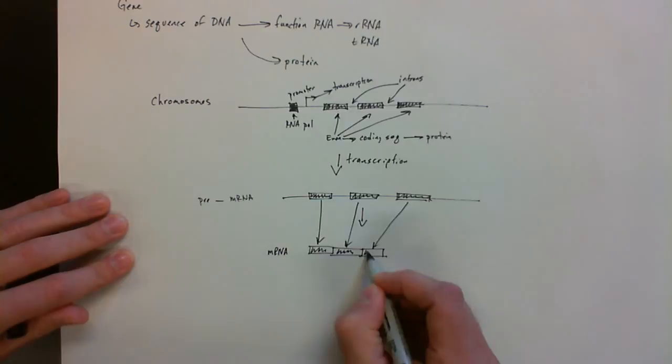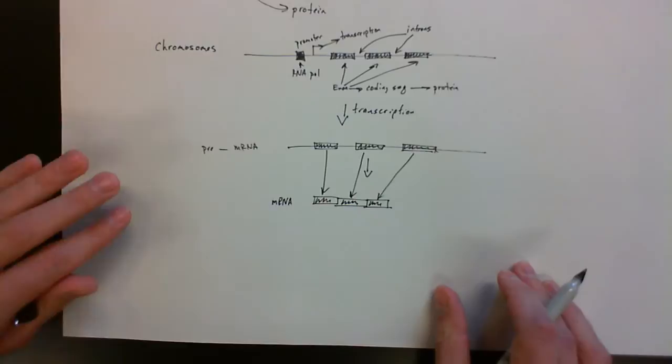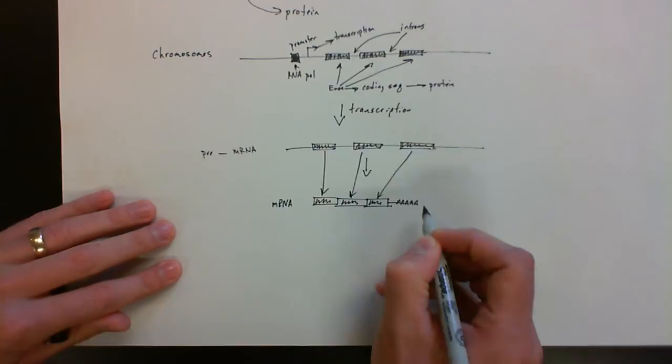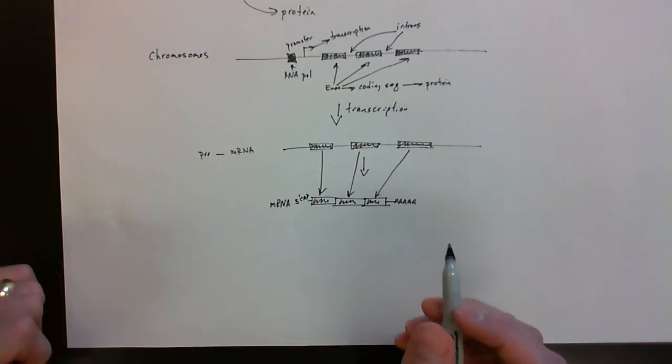And what's kind of interesting is we'll then modify it. So mRNAs themselves are going to have a poly-A tail and what we call a 5' cap. So you can look at my video on RNA splicing to learn a little bit more about this. But I wanted to show you the general structure that we're going to see in the chromosome.